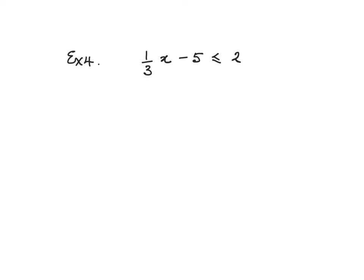Example 4 and the last example for this lesson: 1 third of x minus 5 is less than or equal to 2. Now we've got a fraction to deal with but before we can deal with the fraction we want to get the x term on its own so I'm going to add 5 to both sides.